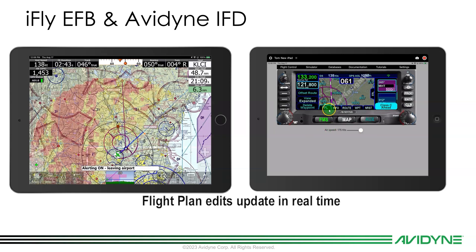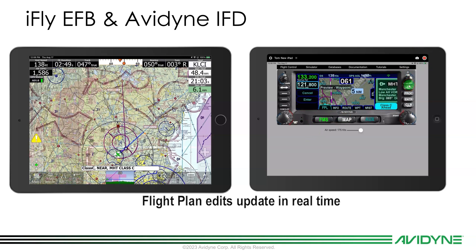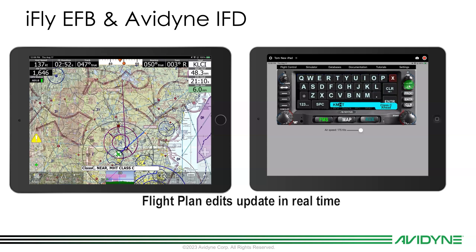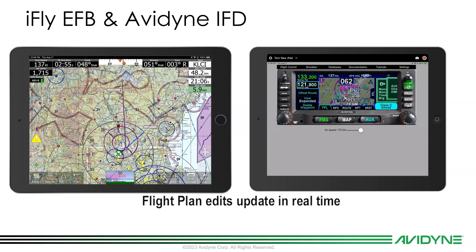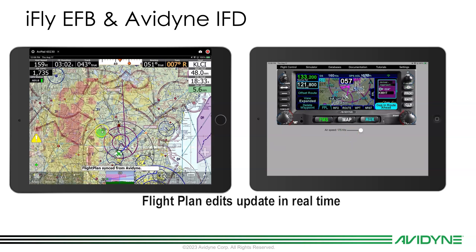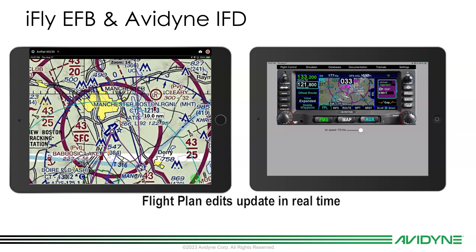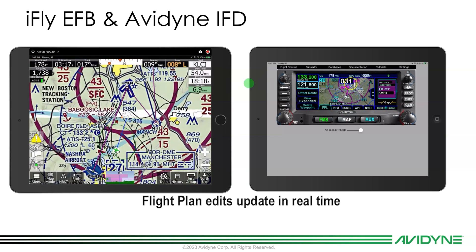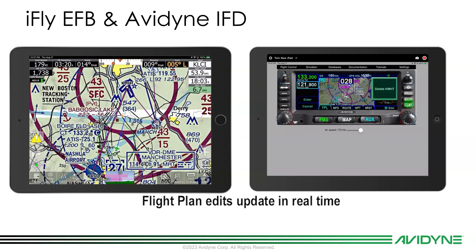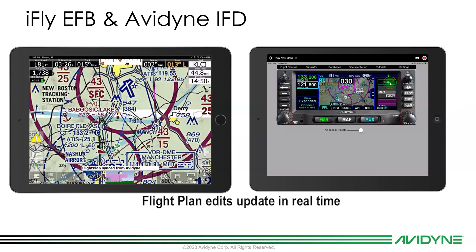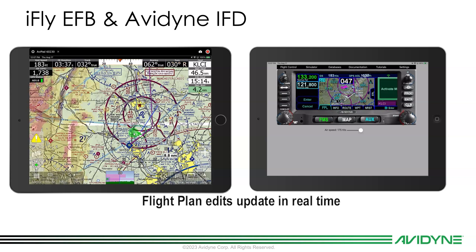Let's say we need to go straight to Manchester Airport instead, so let's just go direct — KEMHT, Enter, Activate. Notice our flight plan is now changed and updated, and we can see we're going direct to Manchester. If I decide to clear the direct-to and clear the gap, I'll just take it out, clear, and activate that leg.